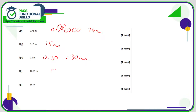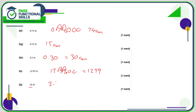12.99 — write it as 12.990, put some zeros on the end, move the decimal point two positions. So that's 1299 centimetres. And 36 metres in centimetres: just multiply this number by 100. When multiplying a whole number by 100, just stick two zeros on the end. Easy.